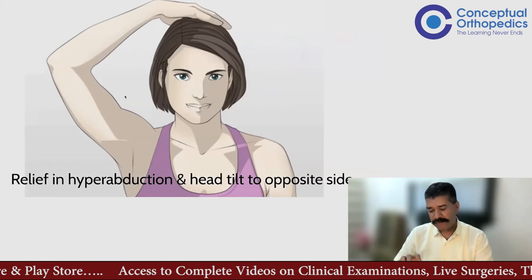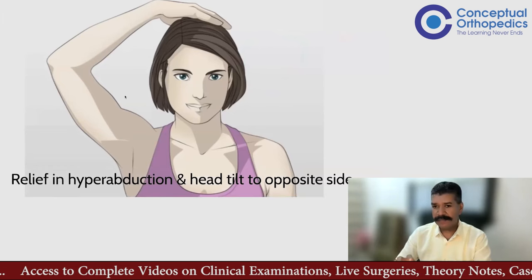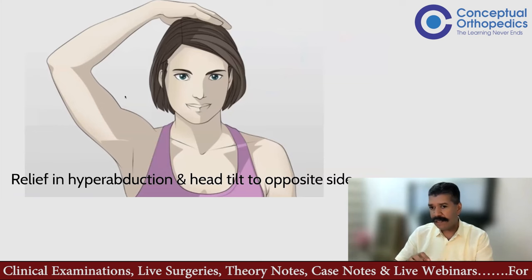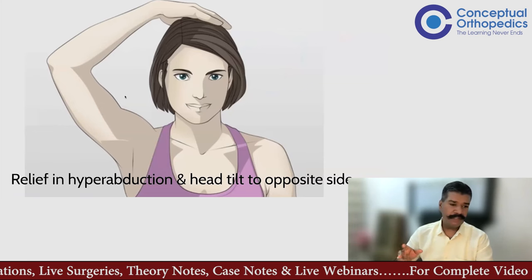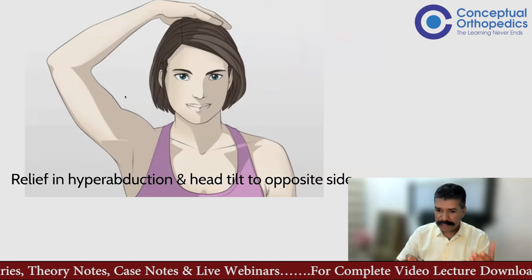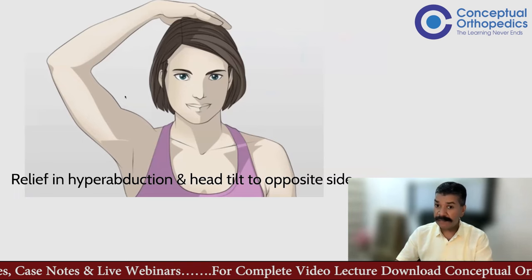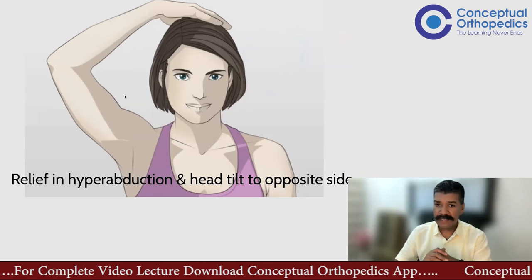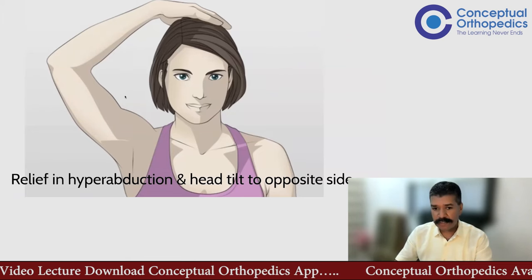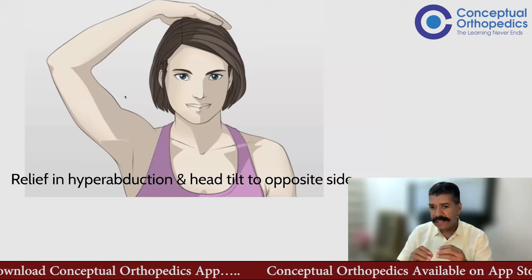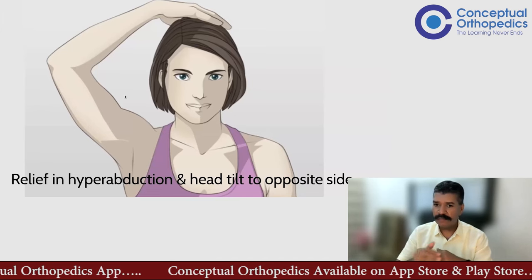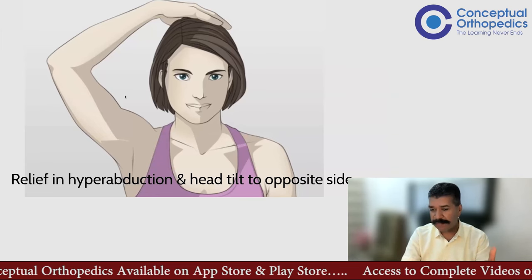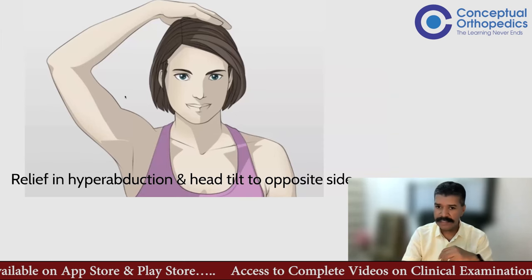One of the cardinal signs of cervical radiculopathy: if a patient presents with neck pain radiating to the arm, before thinking of dermatomal radiation patterns, ask this simple leading question — does keeping your hand on top of the head give some relief? Most patients will tell you they sleep in that position because it is the only position that provides relief. The reason is that shoulder hyperabduction with the head tilted to the opposite side slightly increases the diameter of the foramen through which the nerve root exits, providing considerable relief. Many patients spend the entire night in this position because bringing the arm down causes pain.